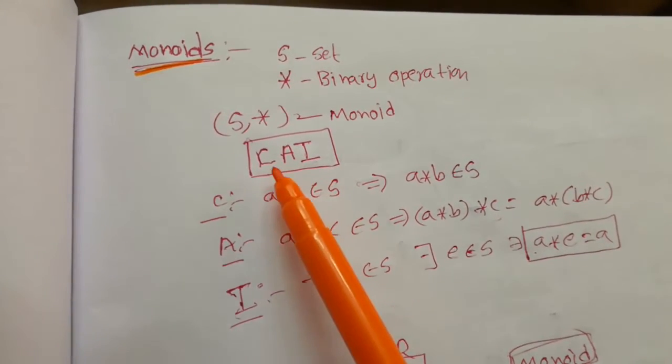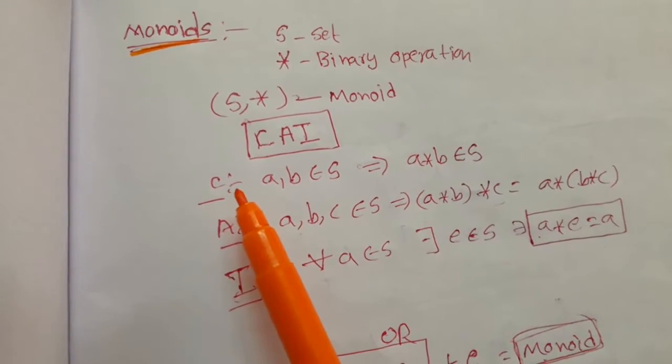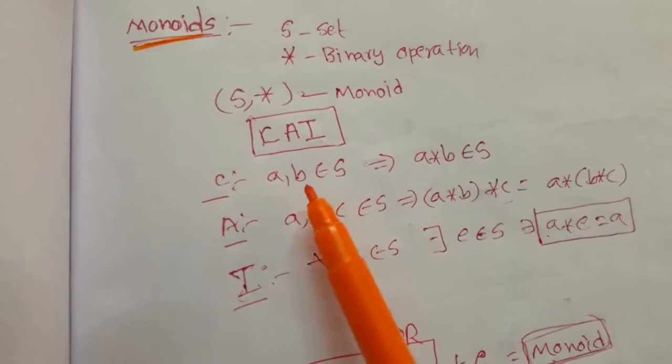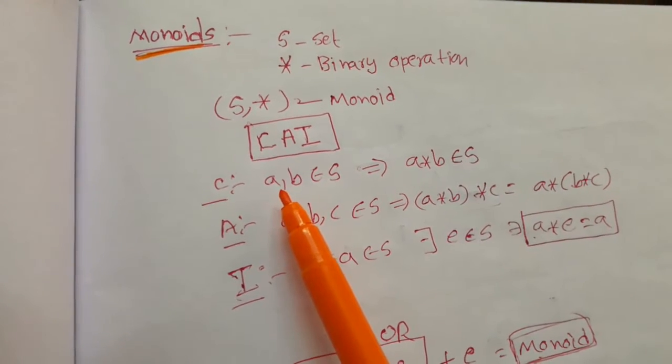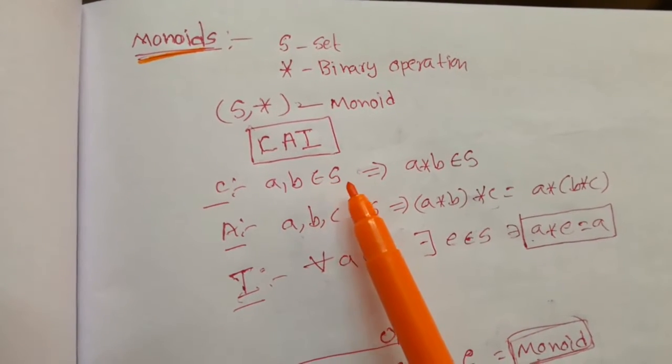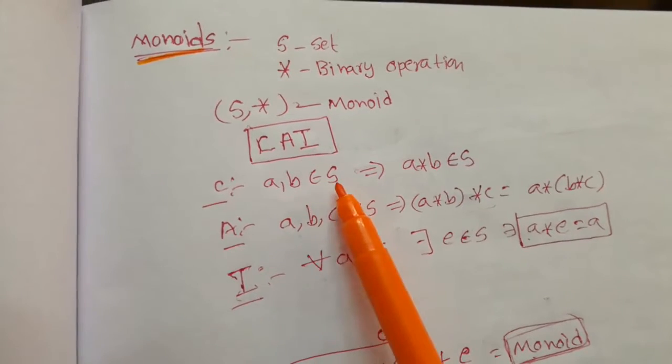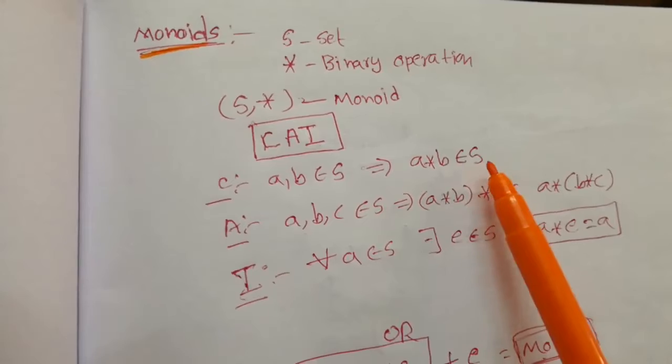So what are these three properties? First is the closer property. It says if A, B belongs to S, that means two elements belong to S, then A star B also belongs to S.